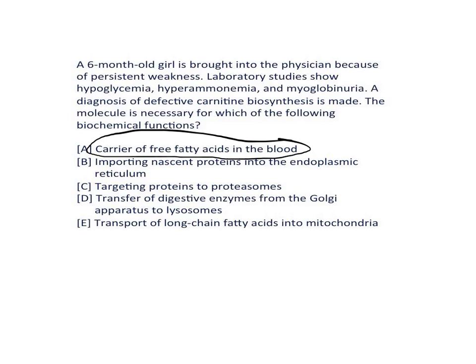Choice B says that carnitine is involved in importing nascent proteins into the endoplasmic reticulum. Nascent proteins are carried into the endoplasmic reticulum by the signal sequence present at the N-terminal of the protein molecule, so that is not the correct choice.